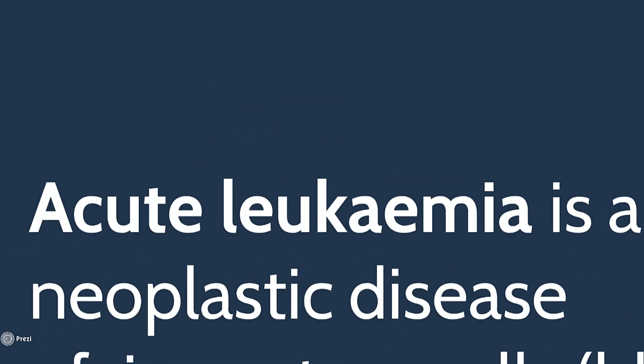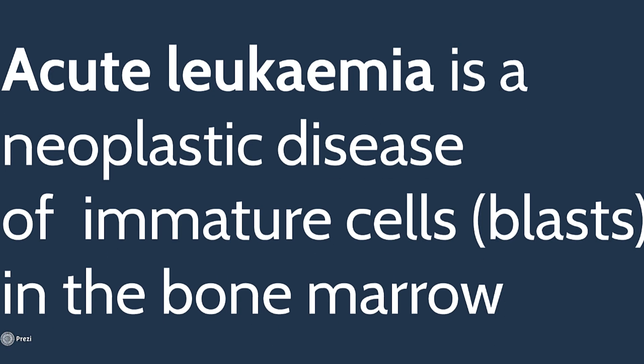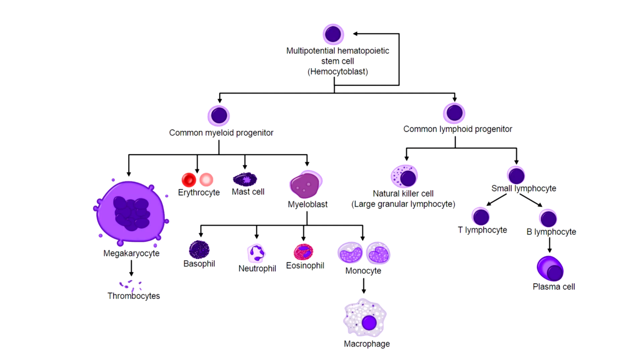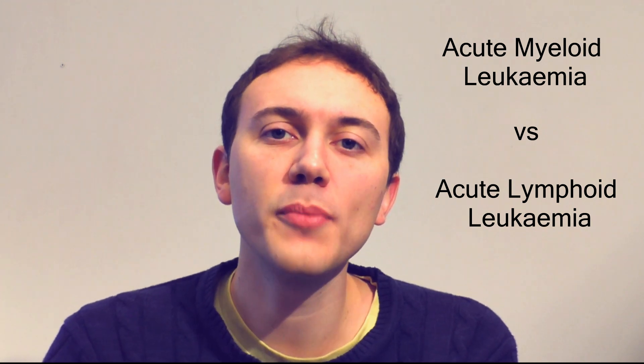Acute leukaemia is a neoplastic disease of immature blood cells called blasts in the bone marrow. Tests can show us whether the cells are from the myeloid lineage or the lymphoid lineage, and on this basis we can say that the leukaemia is acute myeloid leukaemia or acute lymphoid leukaemia. The acute leukaemias have a dramatic, stormy onset.